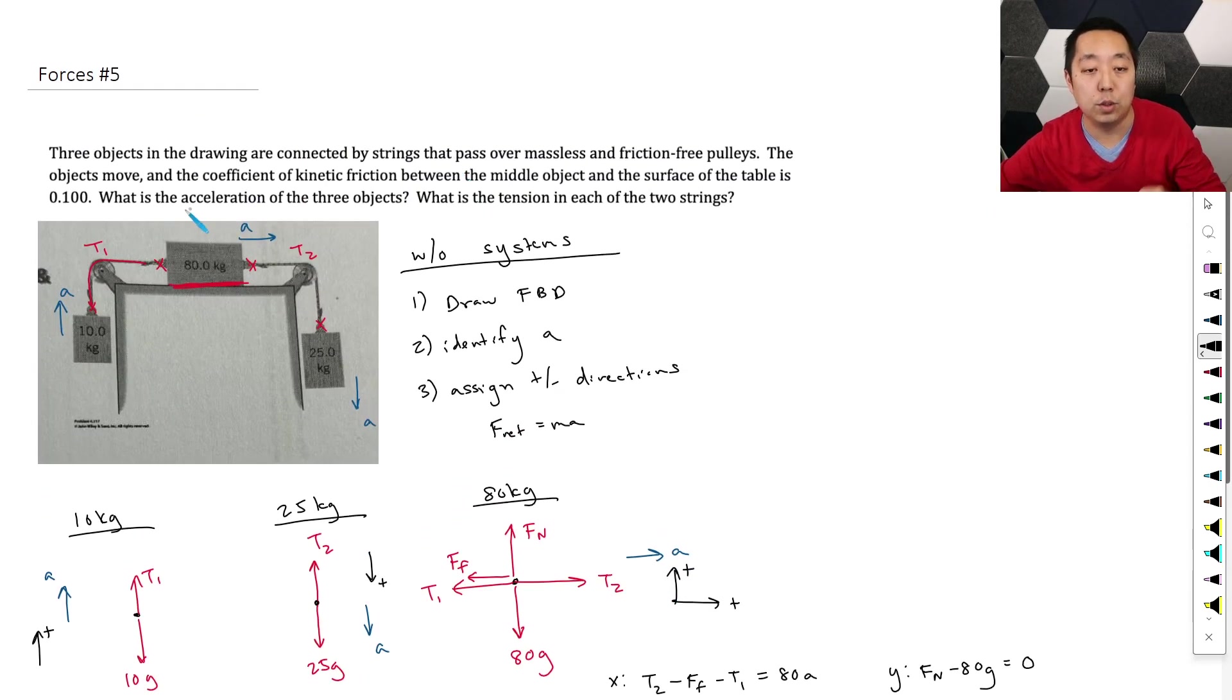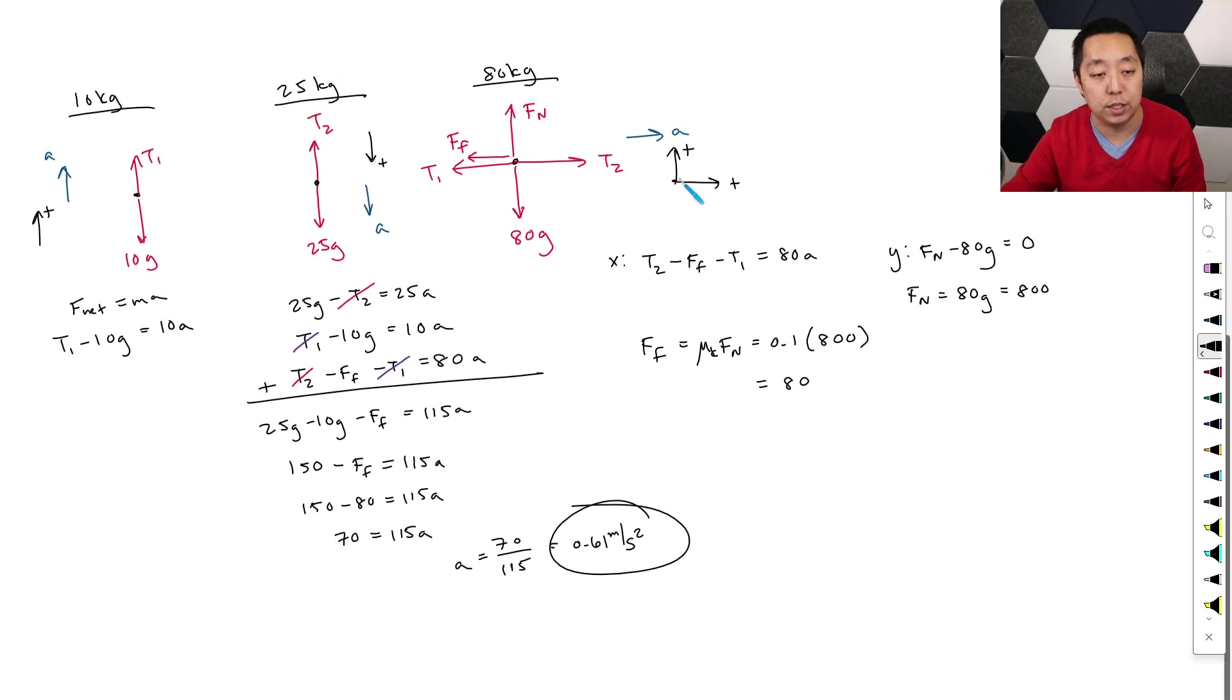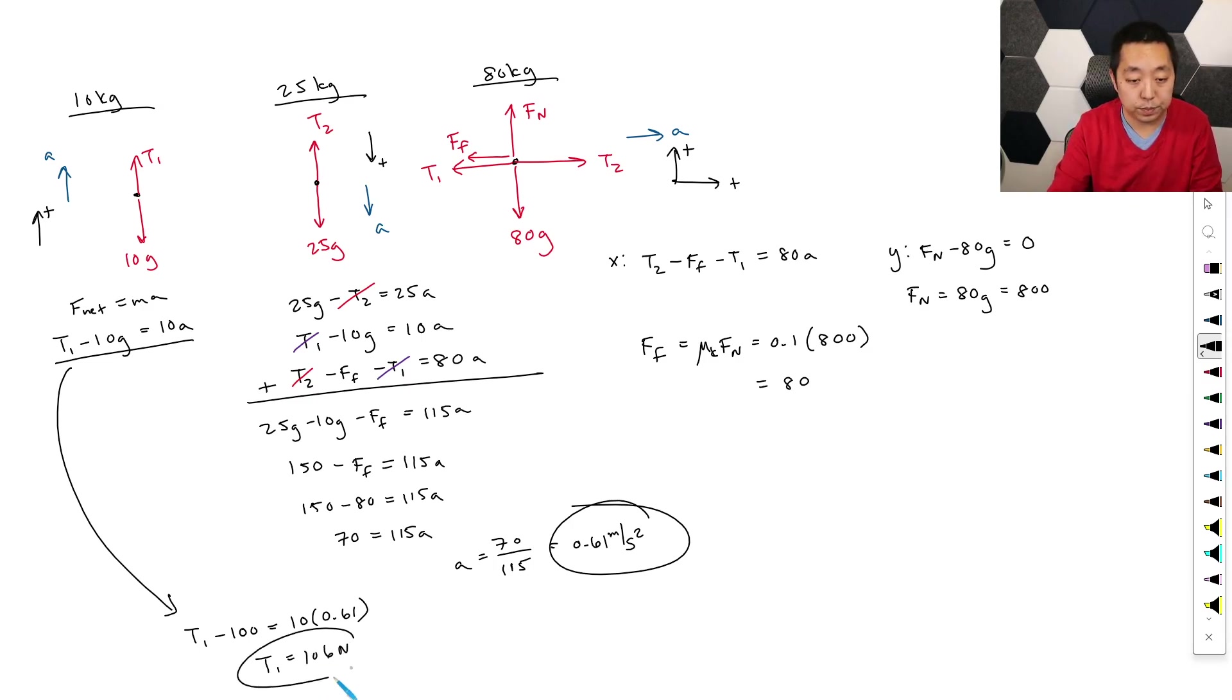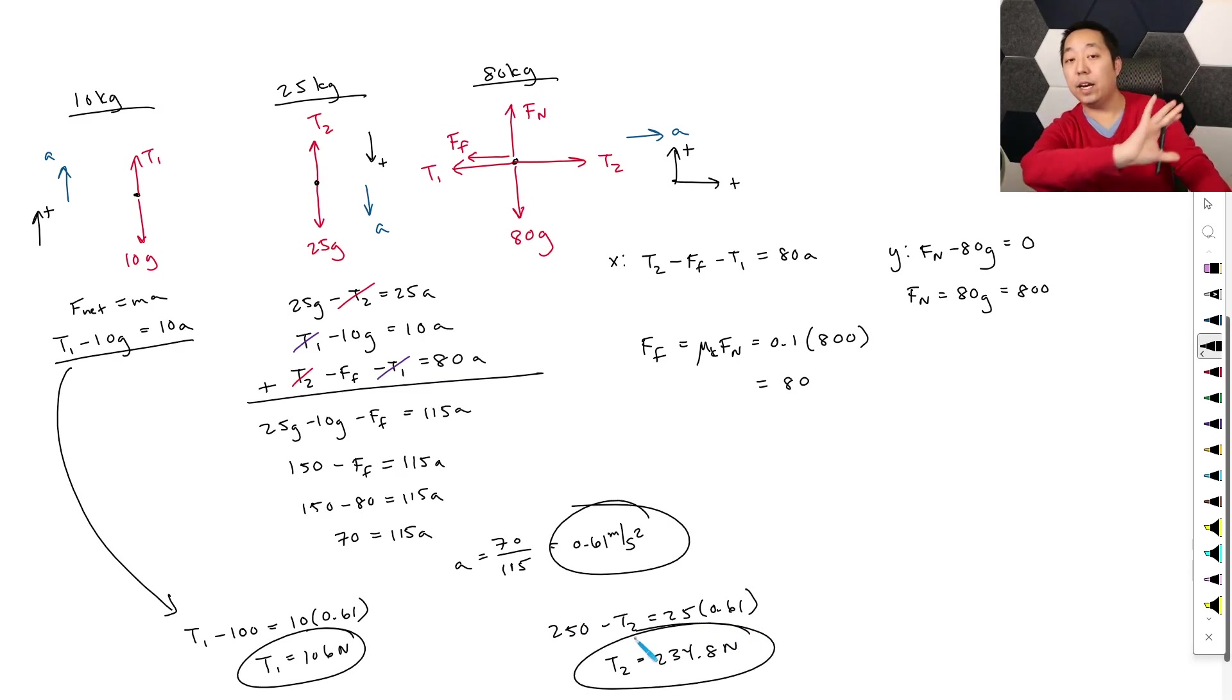So that's the first part of this question, was the acceleration of three objects. What is the tension in each of the strings? Then we can use any of our equations to solve for the tension. So here I have T1 minus 100 by using g of 10 is equal to 10 times 0.61. And then I can solve for T1 here, and I get 106 newtons. How about for T2? This one's probably the easiest equation. That's going to be 250 by g of 10 minus T2 is equal to 25 times 0.61. And then you can solve for T2 here. Using my calculator, I get 234.8 newtons.